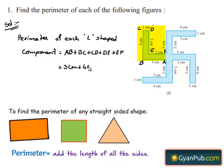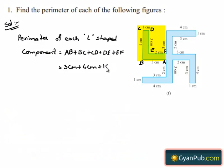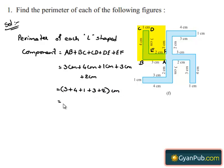This is equal to 3 plus 4 plus 1 plus 3 plus 2 cm. Computing: 3 plus 4 gives 7, 7 plus 1 gives 8, 8 plus 3 gives 11, 11 plus 2 gives 13 cm. Therefore the perimeter of each L-shaped component is 13 cm.